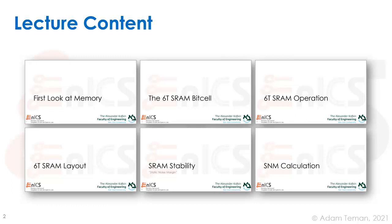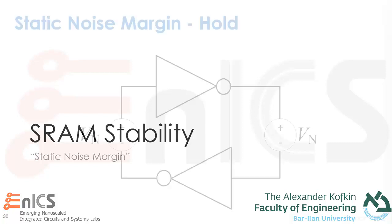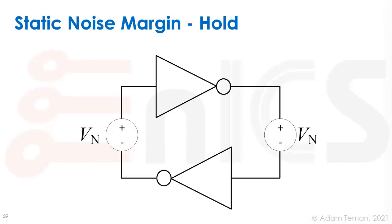We now have a good understanding of what the 6T SRAM bit cell looks like, how it operates, and a bit about its layout. Let's now move over to stability, because remember we're going to have millions of these on a chip and we want to make sure that they actually all work. So we have our cross-coupled inverter pair as shown in the picture below and we want to make sure that it actually works.